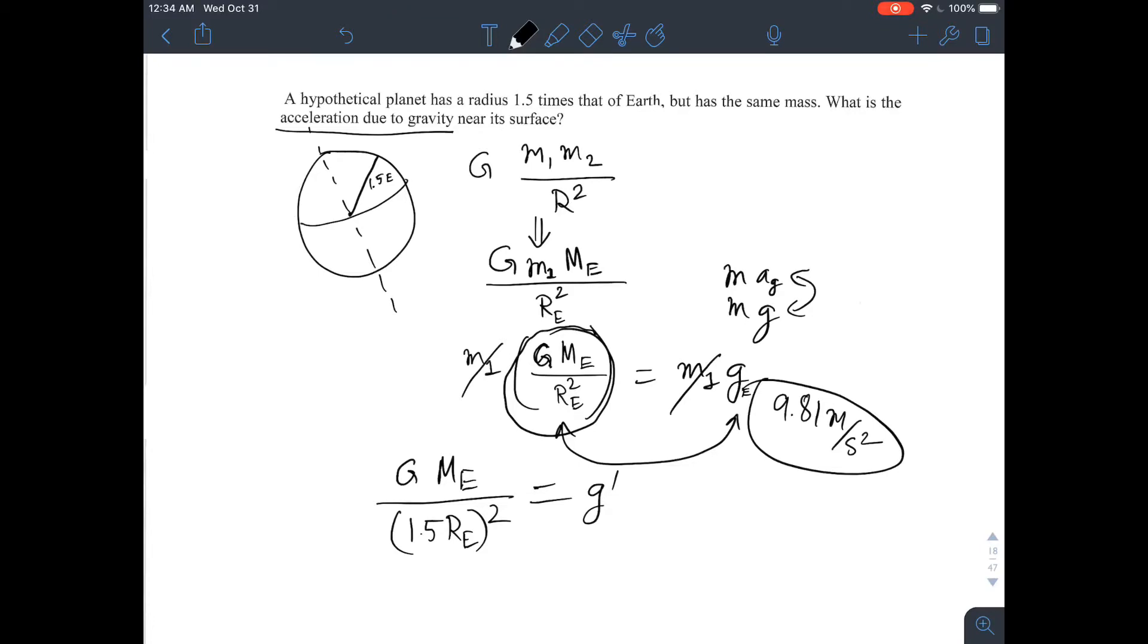There's an easier way to do this. We can give the answer in terms of g. This is pretty much the same as g. We take G times M_E divided by R_E squared, and we just separate out the 1.5. This is just math, nothing clever. And this right here is g. So that's the same as g divided by 1.5 squared. So if you solve 1 over 1.5 squared and multiply by g, it comes out to 4.36 meters per second squared.